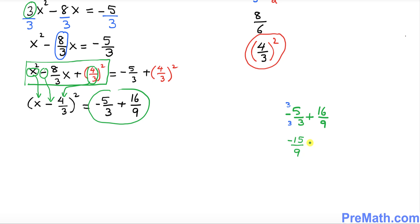Negative 5 over 3 is the same as negative 15 over 9 plus 16 over 9. And since we have the same denominator 9, we got negative 15 plus 16. This turns out to be 1 over 9. So that means this right hand side fraction is same as 1 over 9. And on the left hand side we have x minus 4 over 3 square.